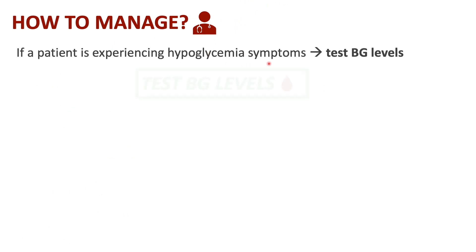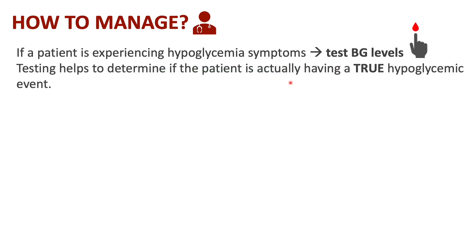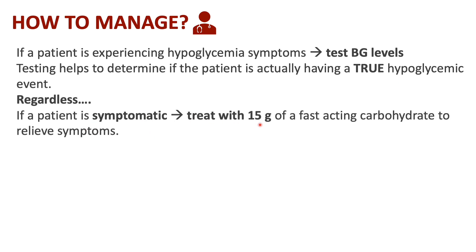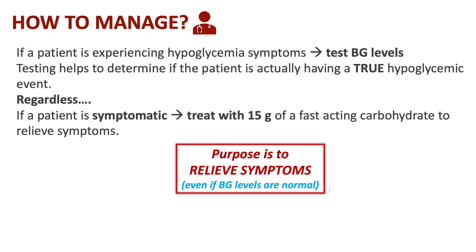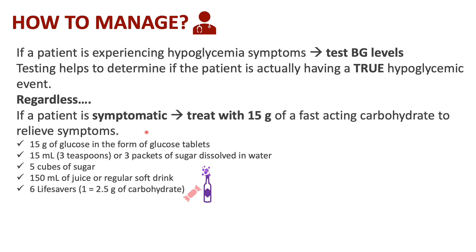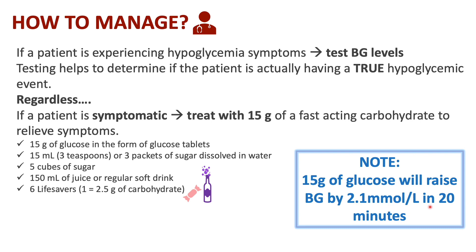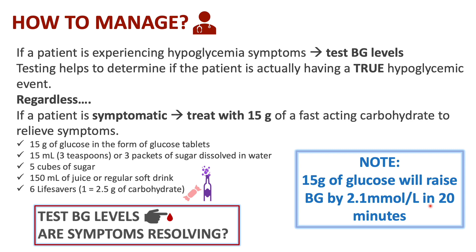Moving on to management: if a person is experiencing hypoglycemic symptoms, we want to test blood glucose levels to determine if the person is having a true hypoglycemic event — are levels less than or greater than 4 millimoles per liter? Regardless, if a person is symptomatic, treat with 15 grams of a fast-acting carbohydrate to relieve the symptoms, even if blood glucose levels are within range. This can be done with glucose tablets, sugar, 150 ml of juice or a soft drink, or six lifesaver candies. Note that 15 grams of glucose will generally raise blood glucose levels by 2.1 millimoles in approximately 20 minutes — a good time to retest.